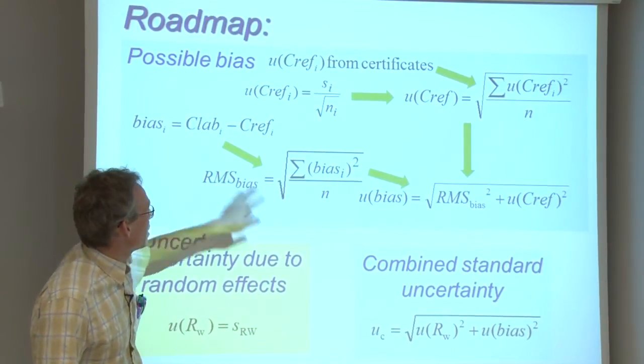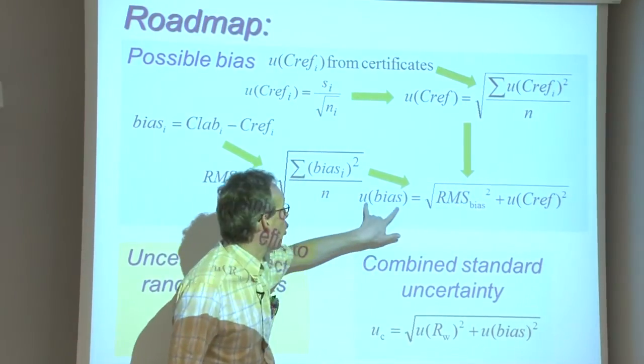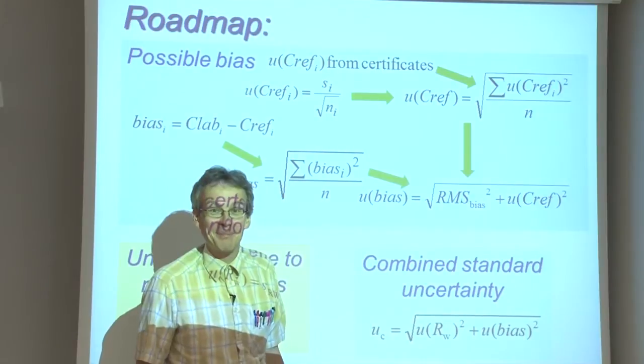Now, RMS bias and UC ref are combined into the overall possible bias estimate.